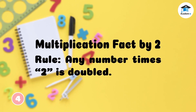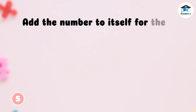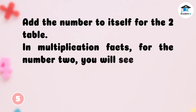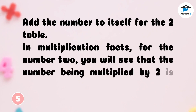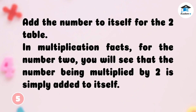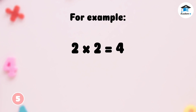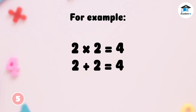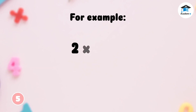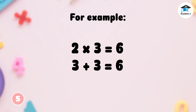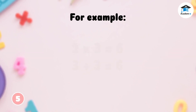To know the multiplication fact by 2, remember that the rule is: any number times 2 is doubled — add the number to itself. For example, 2 times 2 is equal to 4; let's add 2 by itself: 2 plus 2 equals 4. Next example: 2 times 3 is equal to 6; 3 plus 3 equals 6.